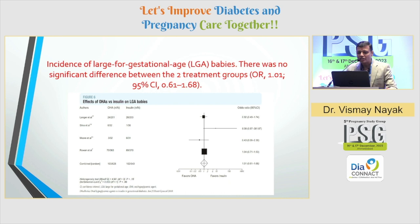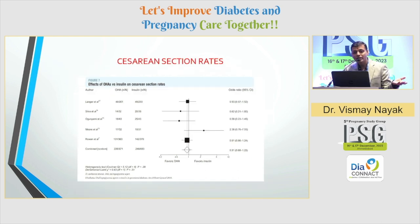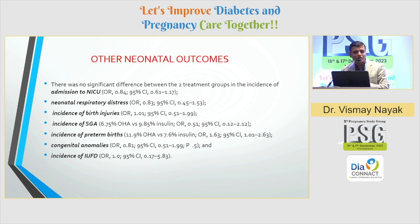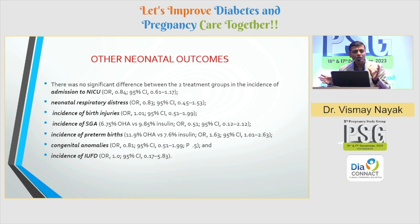What about incidence of large for gestational age? Both groups had the same incidences — no difference. What about caesarean section rates? Both groups were the same, as you can see in the forest plot. What about other neonatal outcomes — NICU admission, neonatal respiratory distress, birth injuries, small for gestational age, preterm births, or congenital anomalies? All these neonatal outcomes were similar in both OHA and insulin groups.